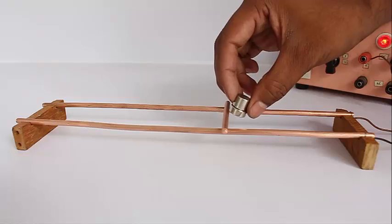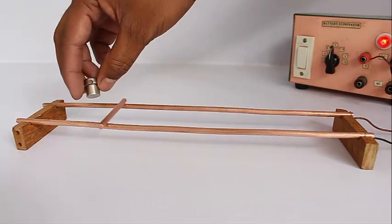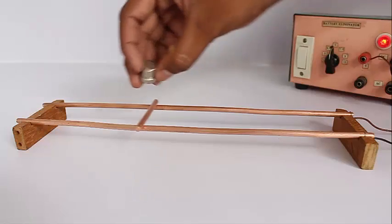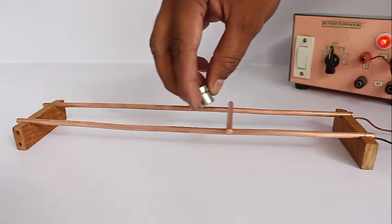We use long copper rods as rails because copper is a good conductor. Other metal rods could have been used, but we would have required a more powerful DC source.